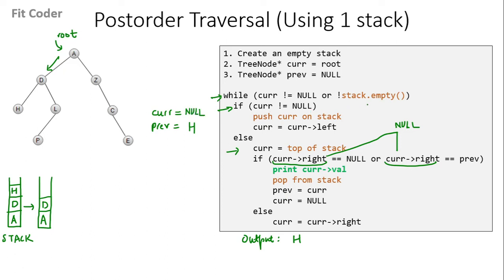Then in the next iteration, stack is not empty, so we come in the else part. `Current` is now equal to top of stack, which is D. Right of D is L, and `previous` is H, so this condition is not true. We come in the else part, and `current` becomes equal to right of D, which is L. In the next iteration, `current` is not equal to null, so we push `current` on the stack, and `current` is now left of L, which is P. In the next iteration, `current` is not equal to null, so we push P on the stack, and `current` is now left of P, which is null.